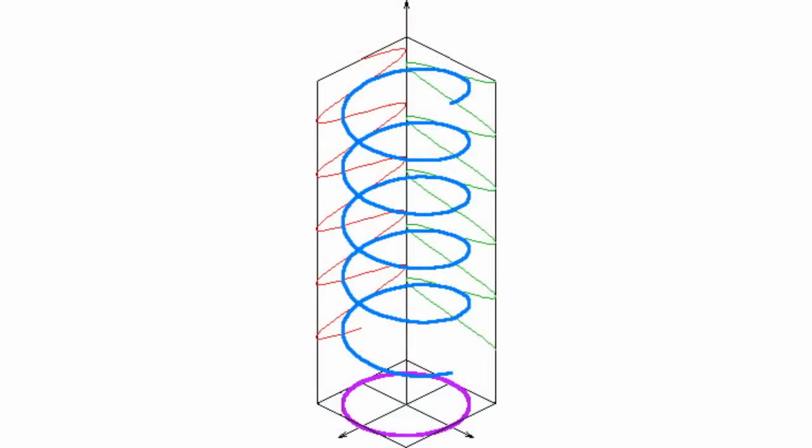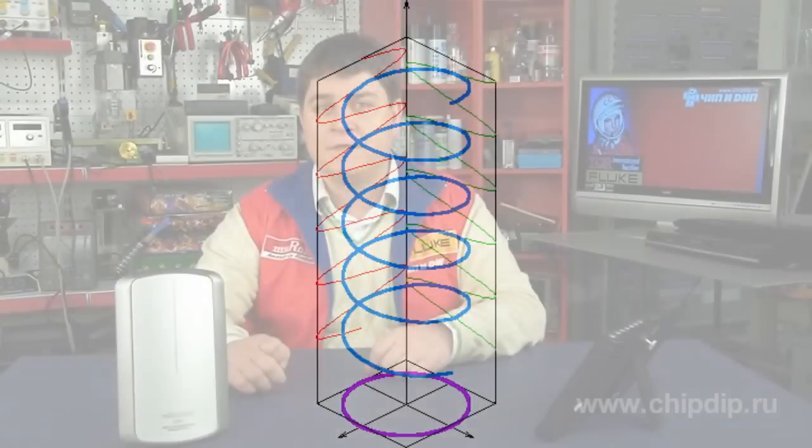If an electric field vector constantly changes its orientation at the angle of rotation, such polarization is called rotatable or circular polarization. A circular polarization is characterized by high-speed clockwise and reverse rotation of a signal. Fields of clockwise and reverse rotation are distinguished depending on the direction of the vector rotation.